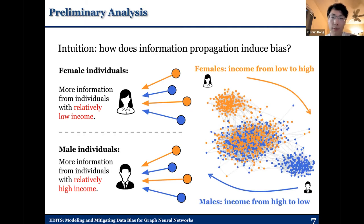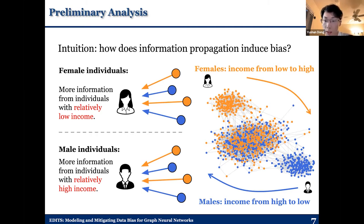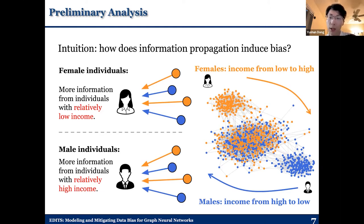We give an example that satisfies the two assumptions we made before. In this network topology, we use orange nodes to represent female individuals, and blue nodes to represent male individuals. For females, from the pure orange community to the mixed community at the middle, the income of the female individuals increases, getting higher and higher. However, for male individuals, from the pure blue community to the mixed community at the middle, the income of males is getting lower and lower. In such a topology, if we perform information propagation, females with high income would tend to interact more with males with relatively low income, which is in alignment with the two assumptions we made before.